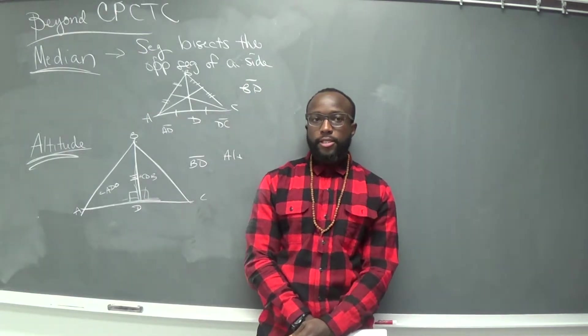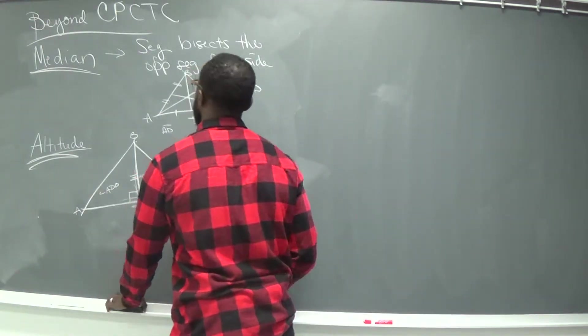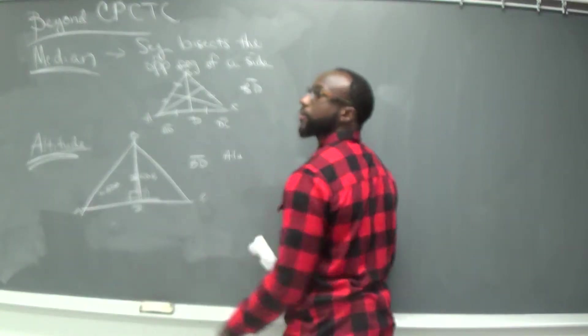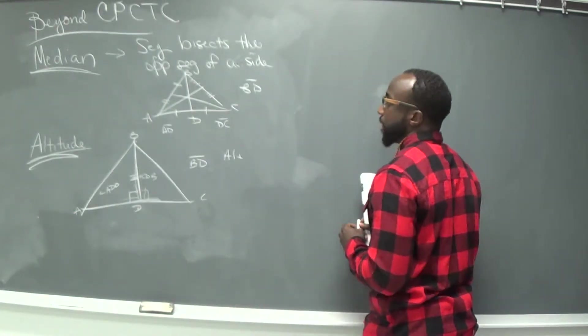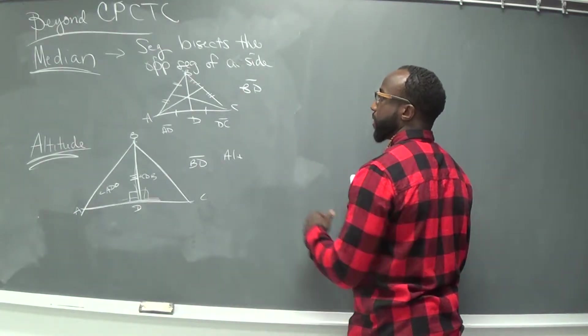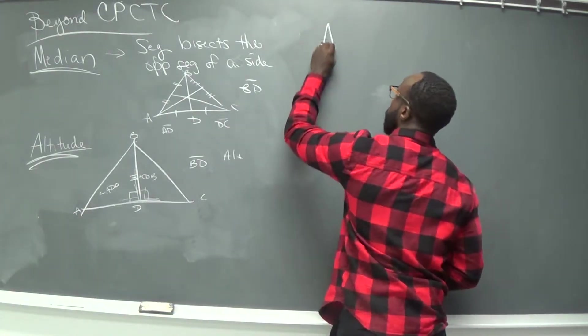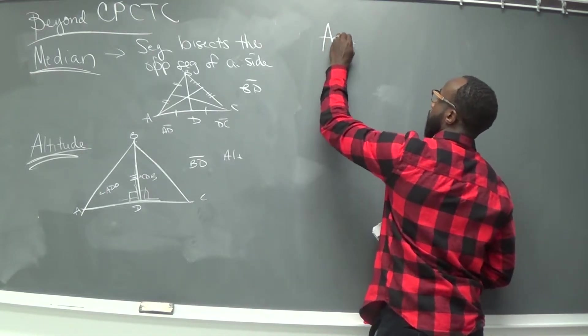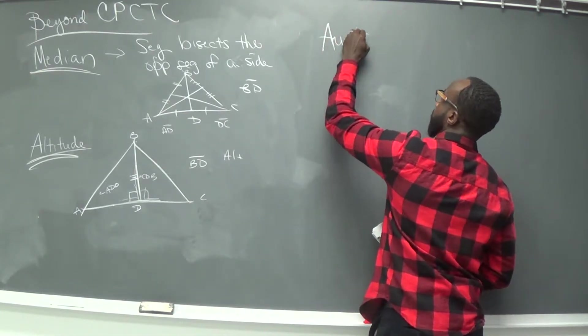So a median cuts the segment in half. An altitude creates a perpendicular line, which makes 90-degree angles. That's the first part of this section. And then we have one more word — it's called an auxiliary line.